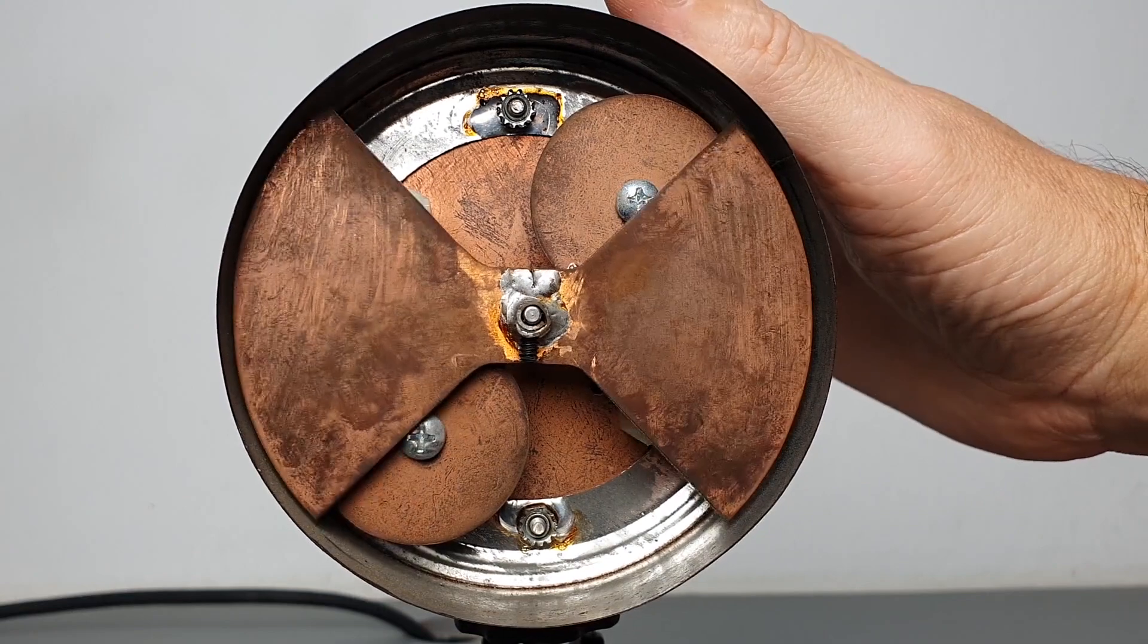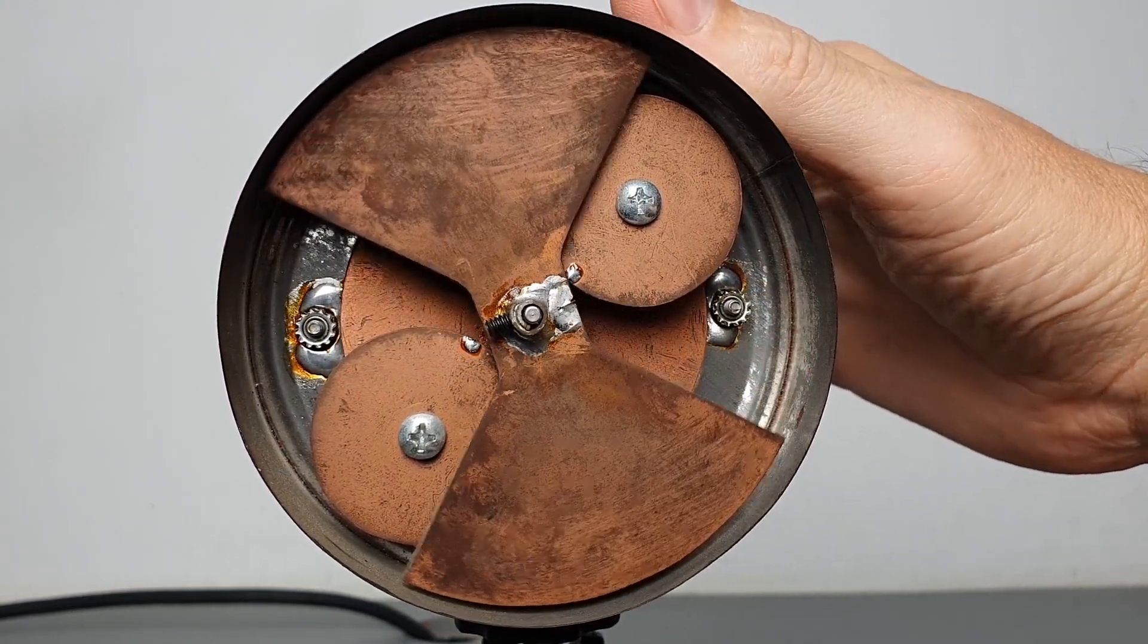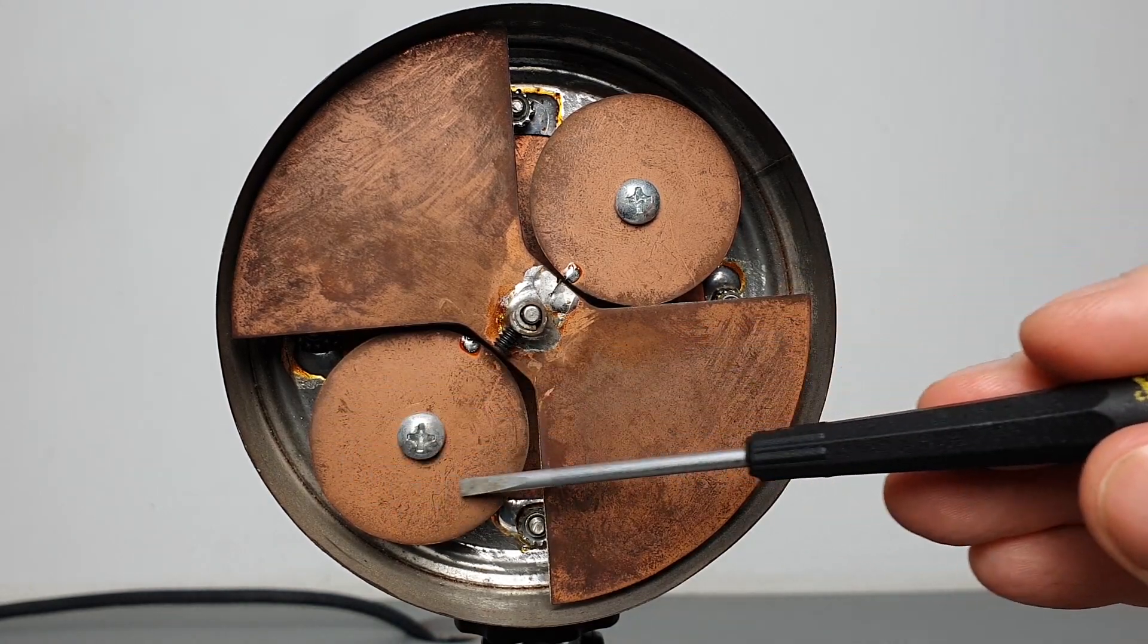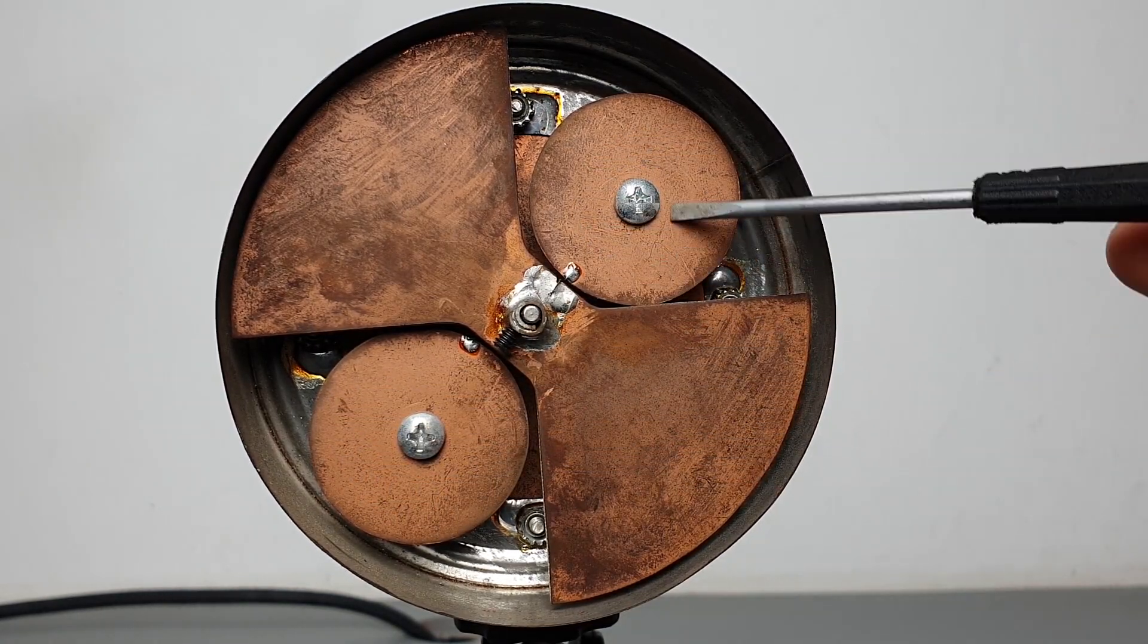As this rotating shutter spins it modulates the capacitance between these two sensing electrodes and the rest of the outside world. That's how it can detect voltages from a distance.